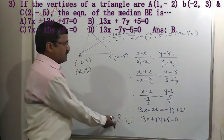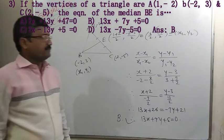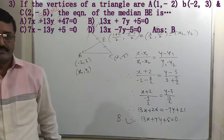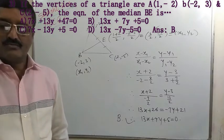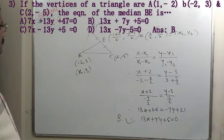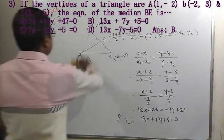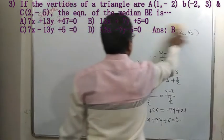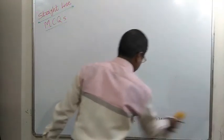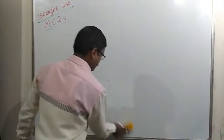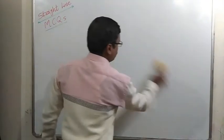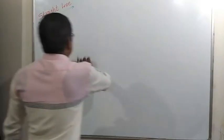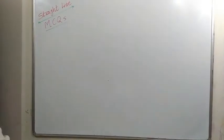Alternatively, you can find the midpoint of AC, then check which given equation is satisfied by both B and E coordinates — that will also give option B.